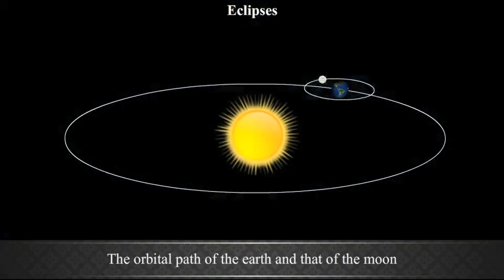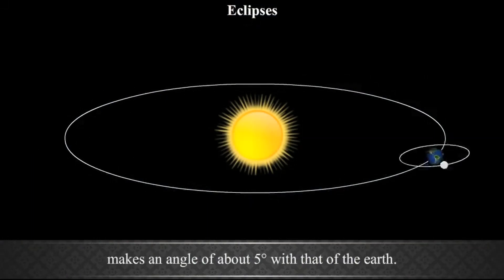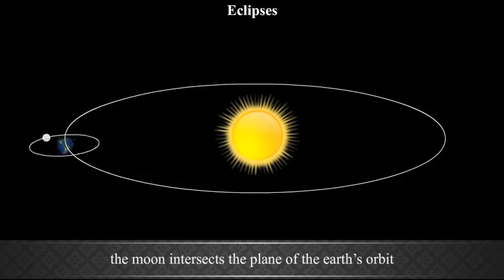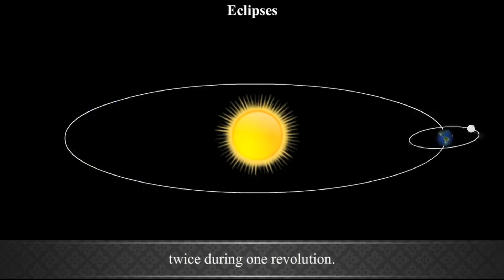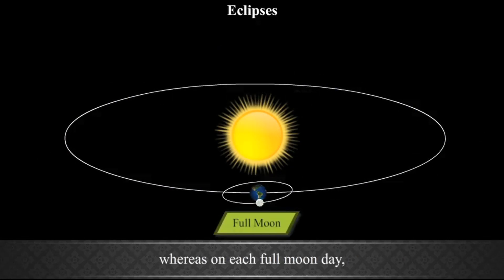The orbital path of the Earth and that of the Moon are not in the same plane. The Moon's revolutionary orbit makes an angle of about 5 degrees with that of the Earth. As a result, the Moon intersects the plane of the Earth's orbit twice during one revolution. On each new moon day, the lines joining the Earth and the Sun and the Moon make an angle of 0 degrees, whereas on each full moon day, this angle is of 180 degrees.